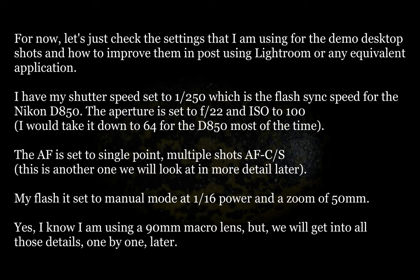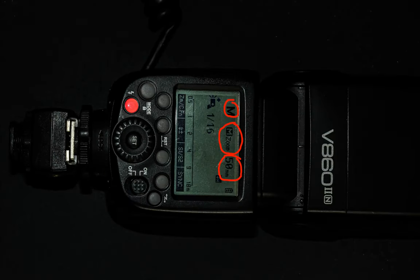The focus is set to a single point and multiple continuous shots. Ideally it would be single point, single shot, but we will discuss this more in detail later — for now it really does not matter. My flash is set to manual mode at 1/16th power and a zoom of 50mm. Yes, I already mentioned that I am using a 90mm macro lens, but we will get into all those details one by one later.